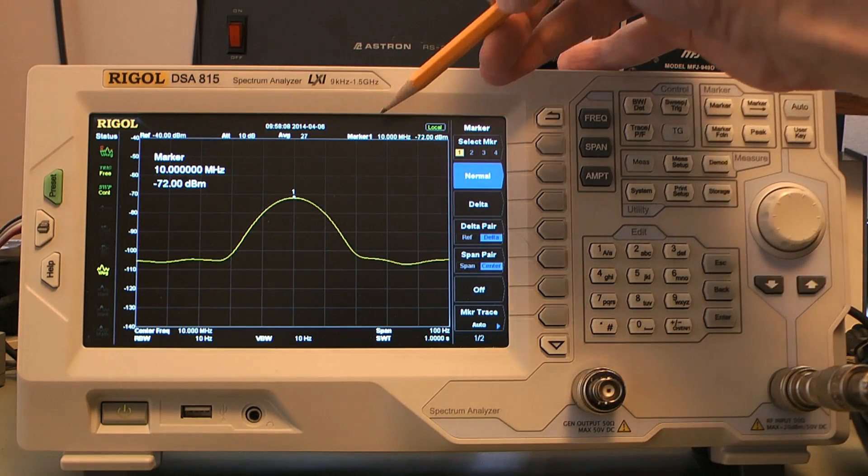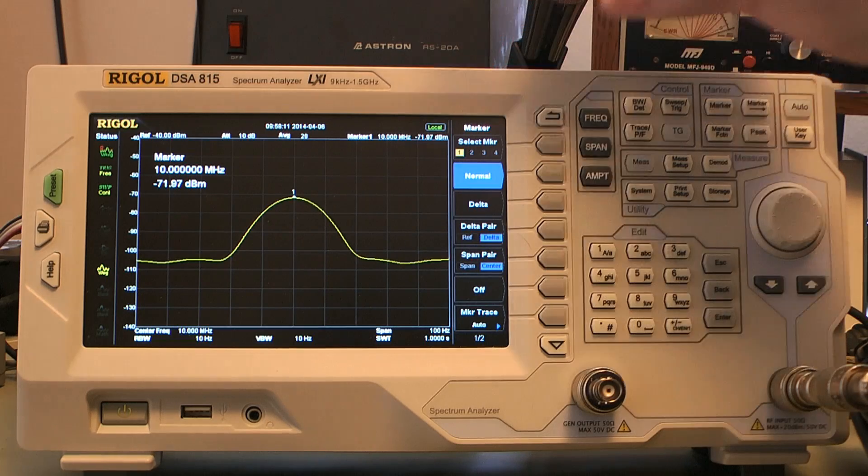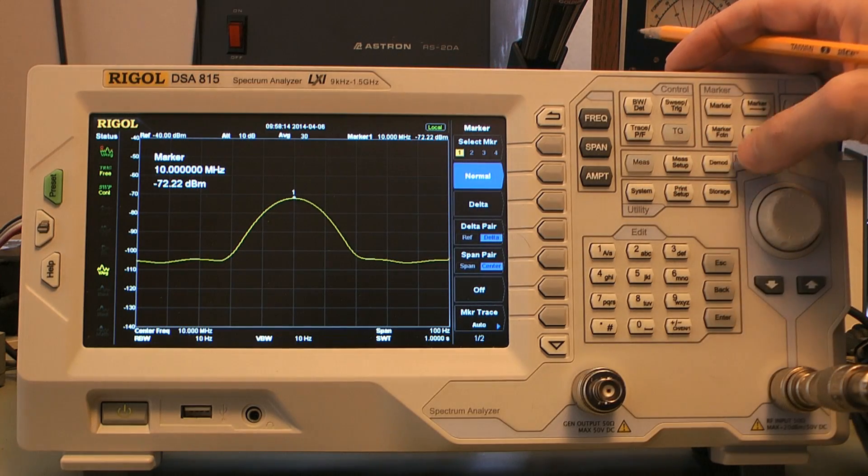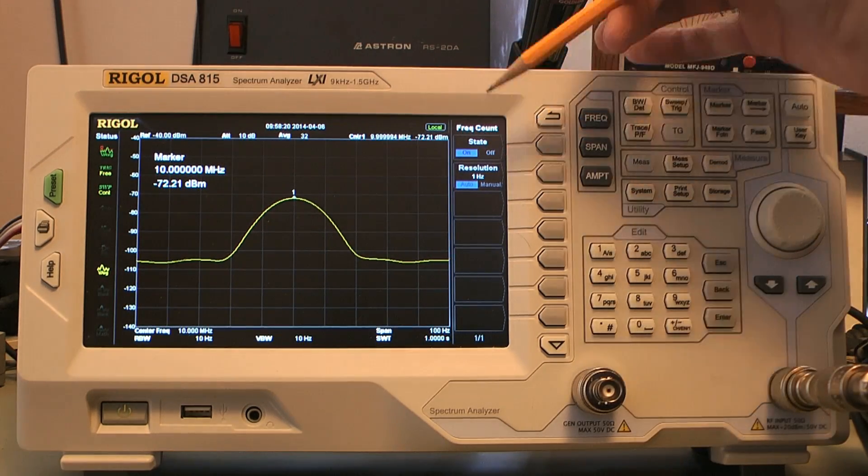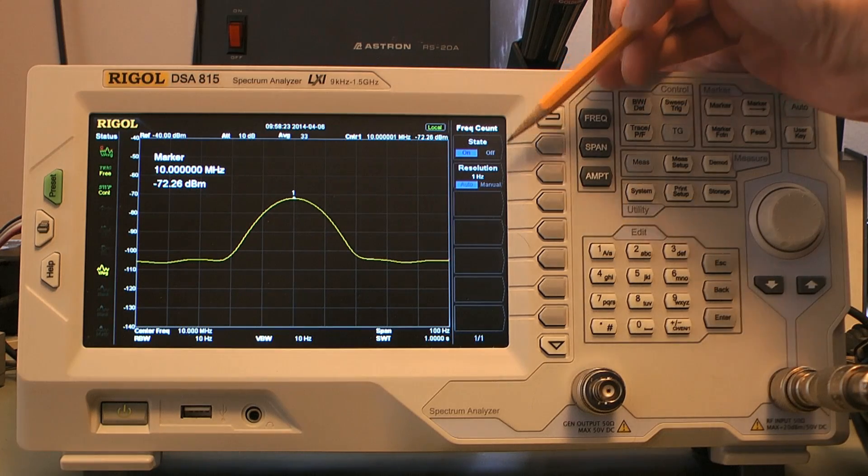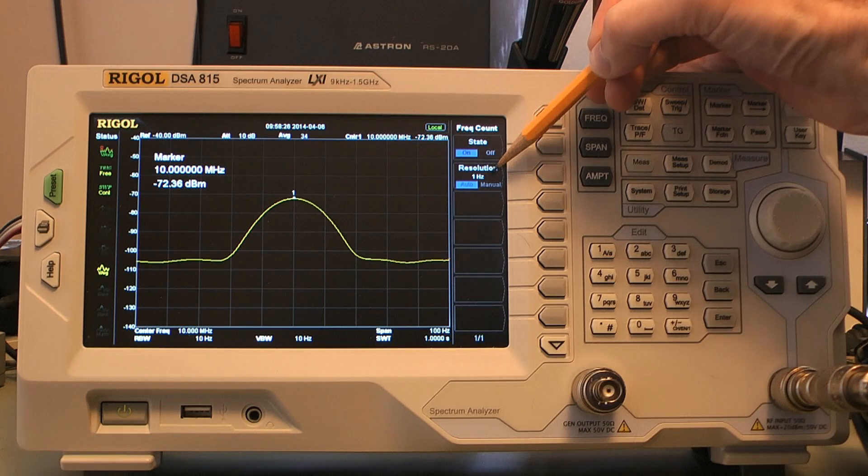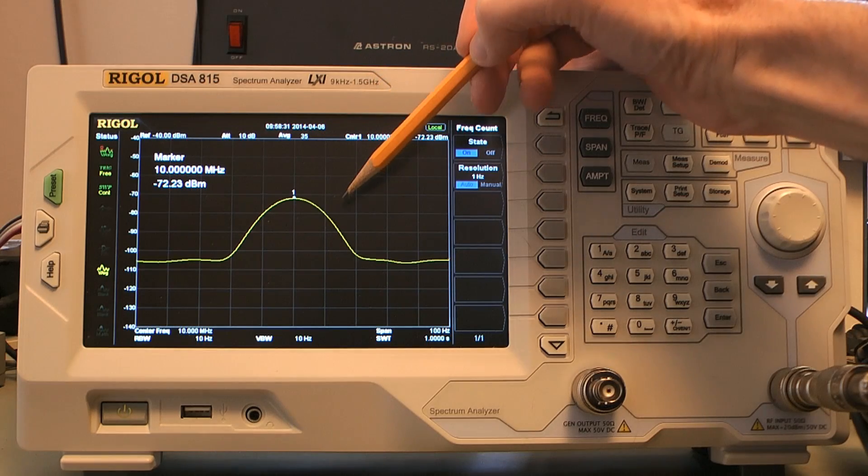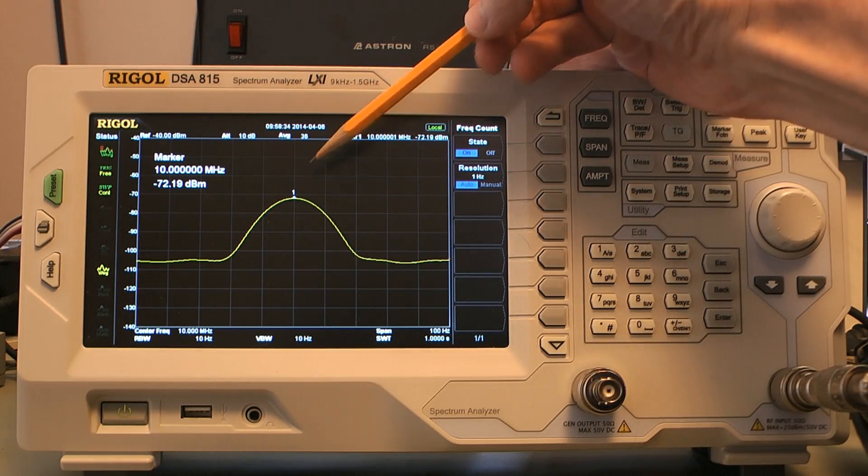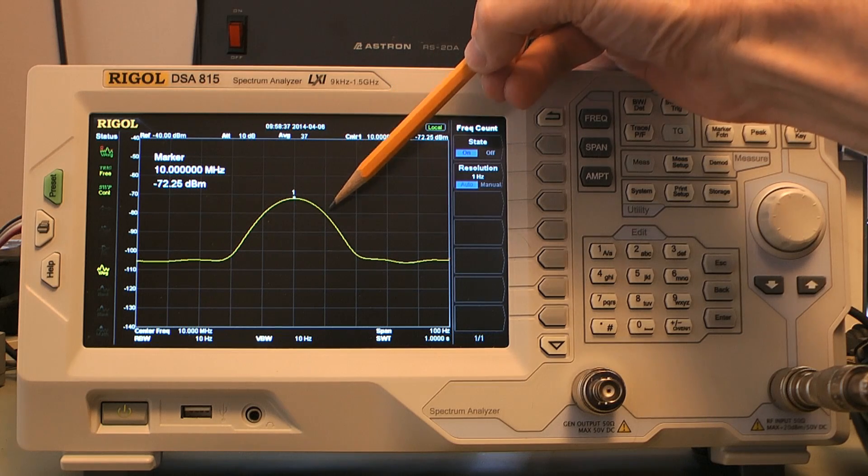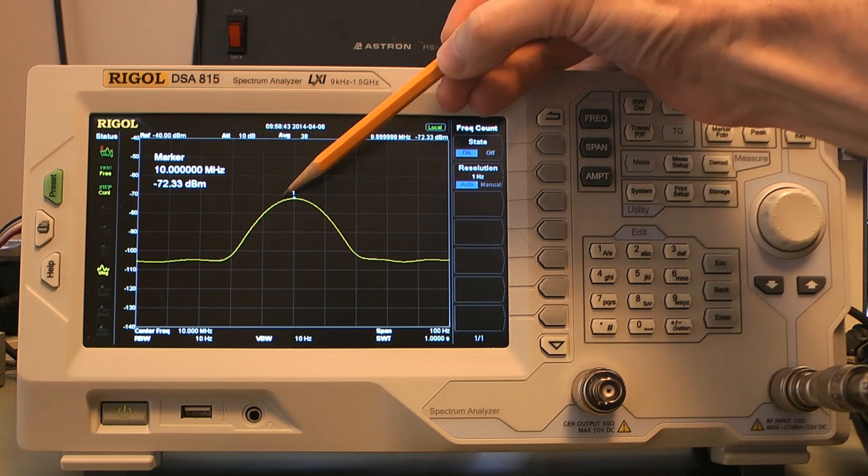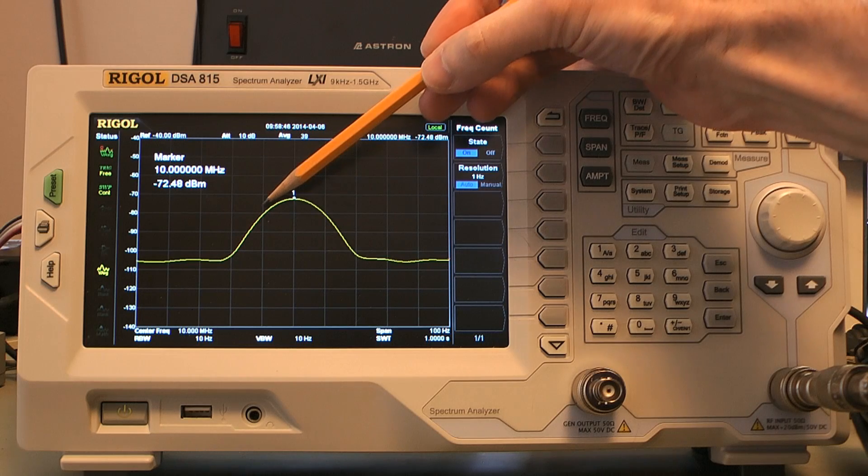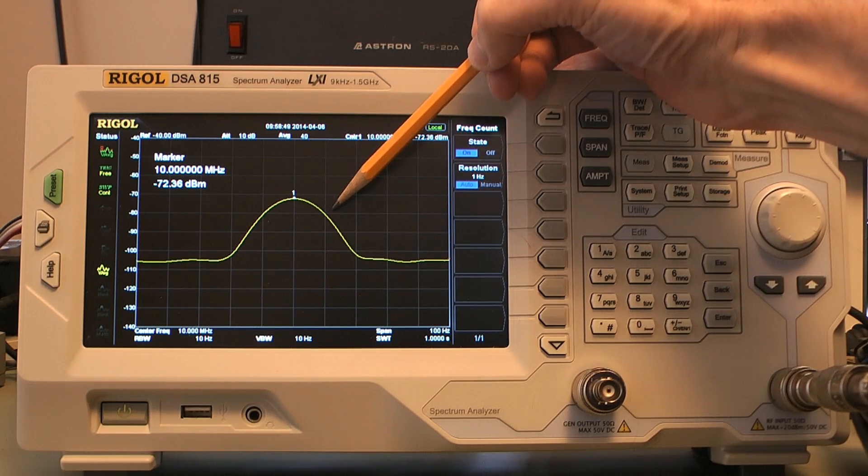So now let's find out how we're doing with the counter. I'm going to turn the counter on, which is marker function, frequency counter. I'm going to turn the state to on because of where I'm at with span and resolution bandwidth, it automatically selected one hertz. If it doesn't, you want to set that yourself manually. And now I'm pretty confident that I have this exactly on because my crossing points of my graticule show me that I'm exactly where I need to be. It's hard to tell exactly where the peak is, so I use these two crossing points to tell me I'm well within a hertz of being centered.